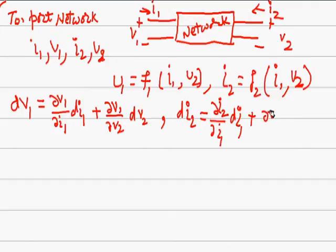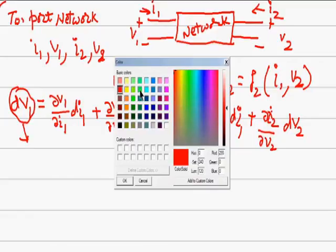DV1 differential tells us total change in V1. It is partial change in V1 because of I1, times total change in I1, plus change in V1 with respect to V2, and total change in V2, which is DV2.